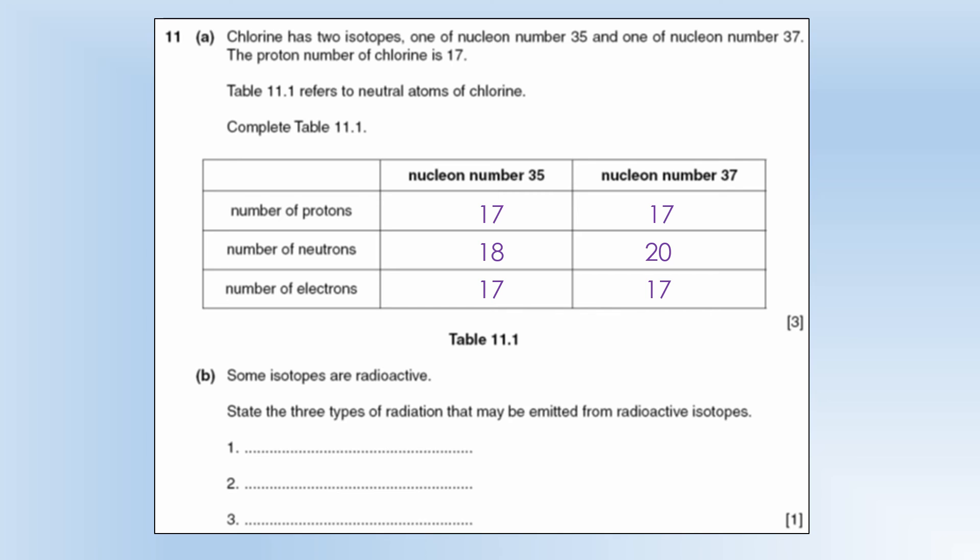Some isotopes are radioactive. State three types of radiation can be emitted, that's our alpha, beta, and gamma. We don't need to say beta minus or beta plus. Beta is fine at this level.